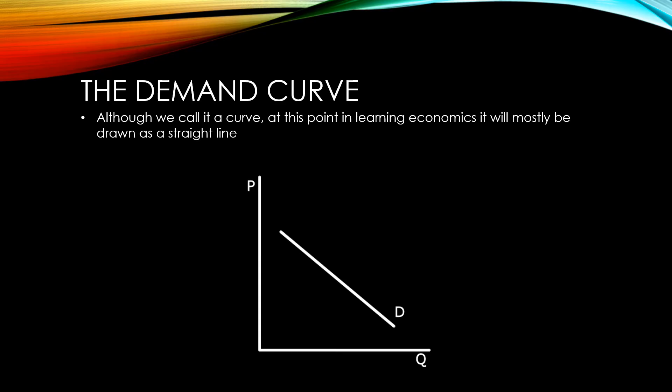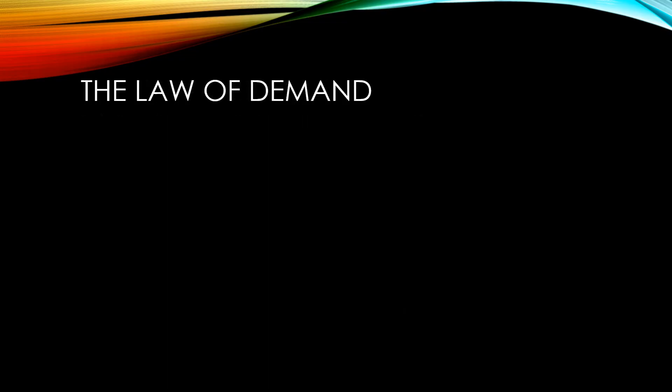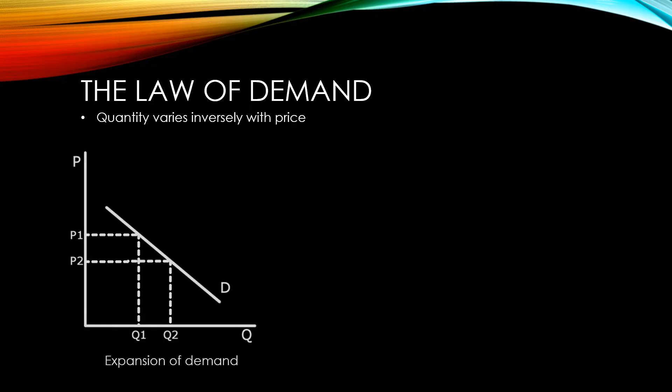Demand curves slope downwards from left to right because of the law of demand. The law of demand states that quantity varies inversely with price. What that means is the higher the price, the less of it someone will buy; the lower the price, the more of it people will buy. This means that if the price of a product is lowered, there will be an increase in demand for that product.